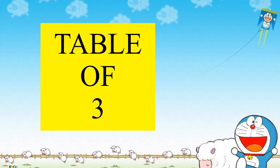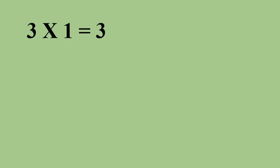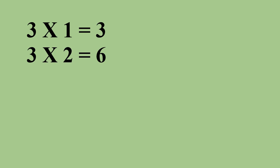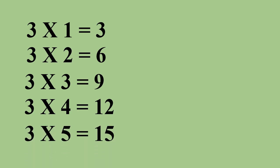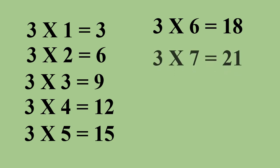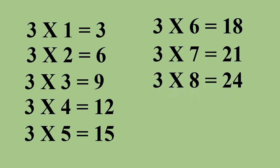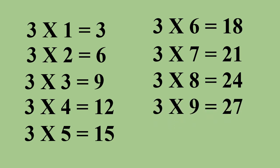Table of 3. 3 1s are 3. 3 2s are 6. 3 3s are 9. 3 4s are 12. 3 5s are 15. 3 6s are 18. 3 7s are 21. 3 8s are 24. 3 9s are 27. 3 10s are 30.